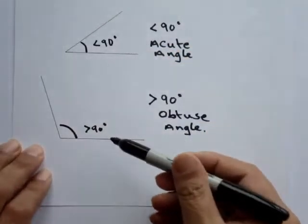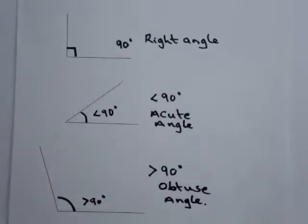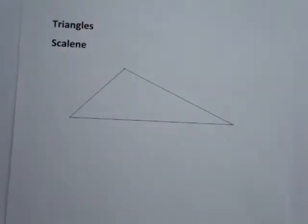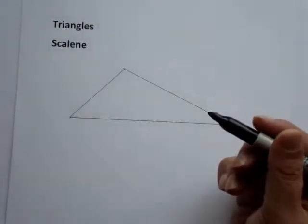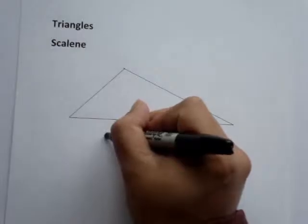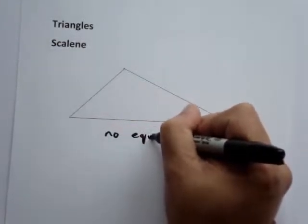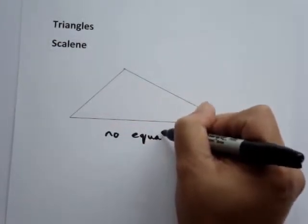So we have acute, obtuse, and right angle. When we're talking about triangles, there are some names used for specific triangles. A scalene triangle has no equal sides — that means in length.